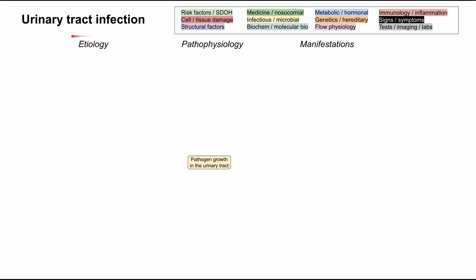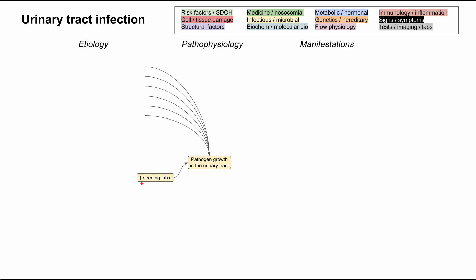At the center of UTIs, the central pathophysiology — which is really just a definition of UTI — is that you have pathogen growth in the urinary tract. There are several bacteria that can cause this, and there are also predisposing factors, including things that increase your risk of seeding an infection, things that irritate the urethral meatus or the urethra in general, and things that cause urinary stasis.